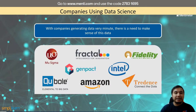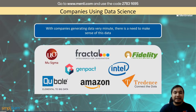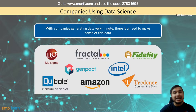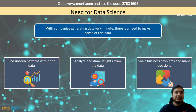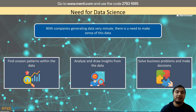Companies like New Sigma, Fractal, Fidelity, Intel, Amazon, and many others connect their dots and use data science in their ventures. Just about every business out there directly or indirectly uses data science to help govern the business and help them grow and compete. When it comes to the need for data science, we use data science models to find unseen patterns within the data, analyze and draw insights while solving business problems and making crisp decisions.